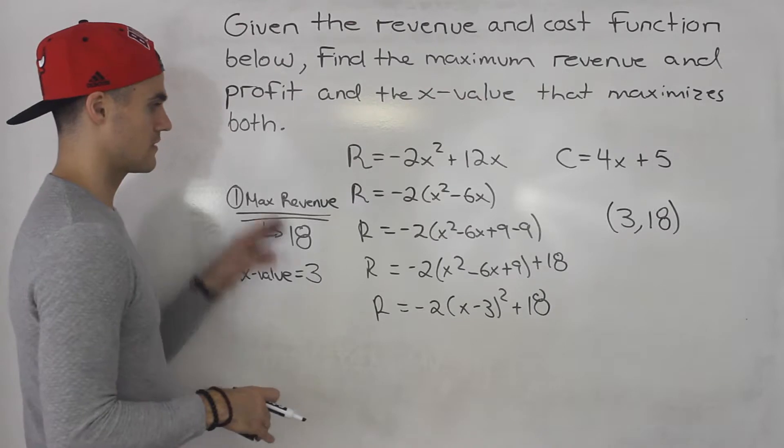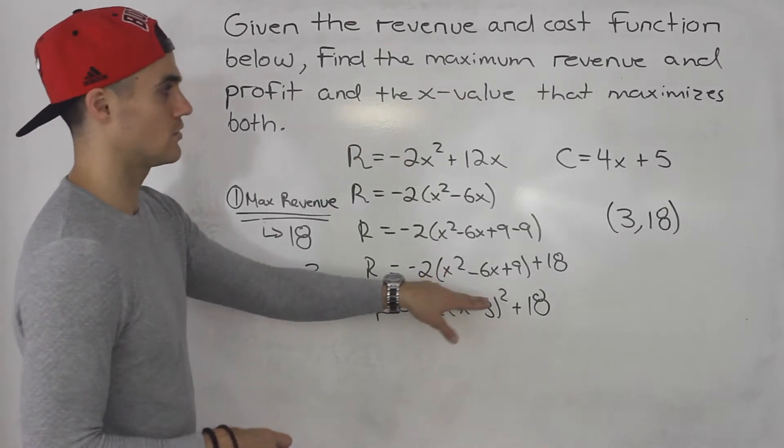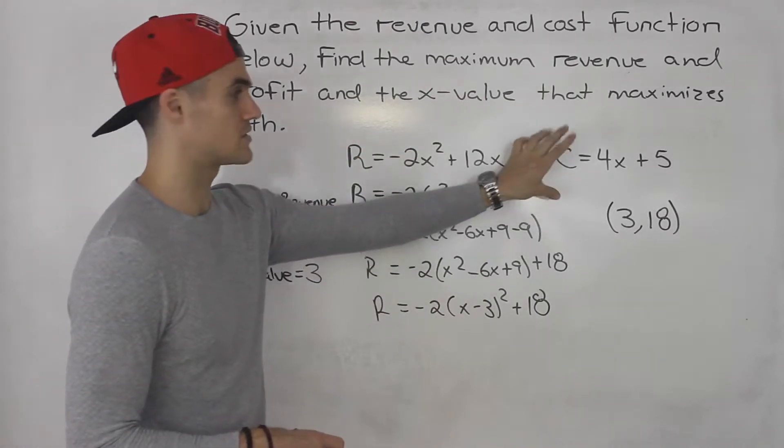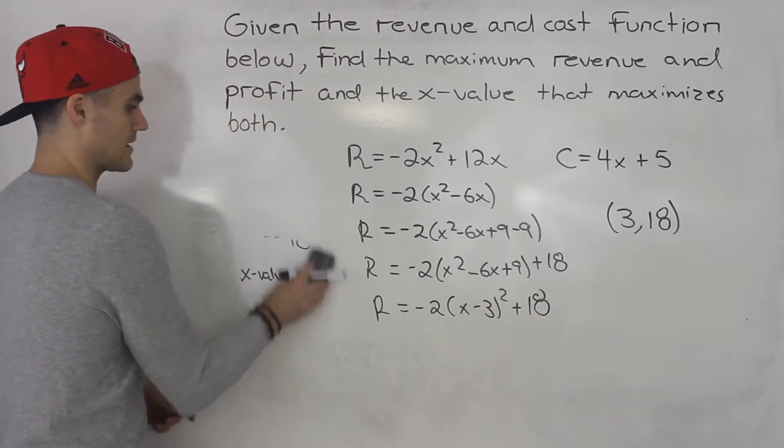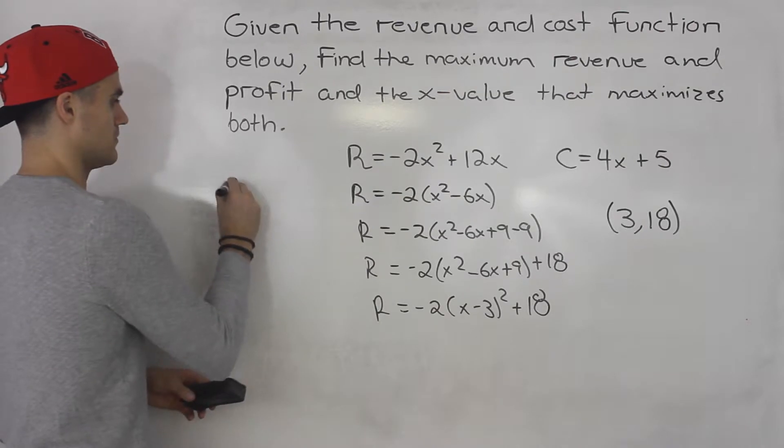All right, so that's how you find the maximum revenue. Just use the revenue function. You don't use the cost function at all. Notice how we didn't even touch this. However, what if they're asking for the maximum profit?